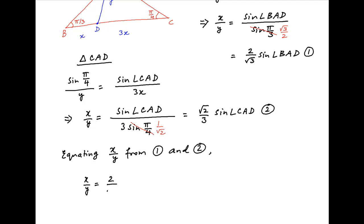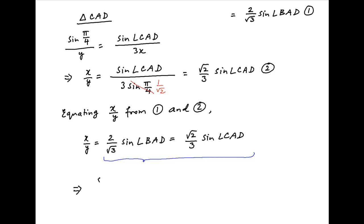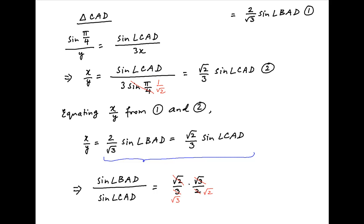Equating the value of x/y from Results 1 and 2, we get (2/√3) × sin(∠BAD) = (√2/3) × sin(∠CAD). Therefore, sin(∠BAD) divided by sin(∠CAD) is equal to (√2/3) × (√3/2), which equals 1/√6. This is the required answer.